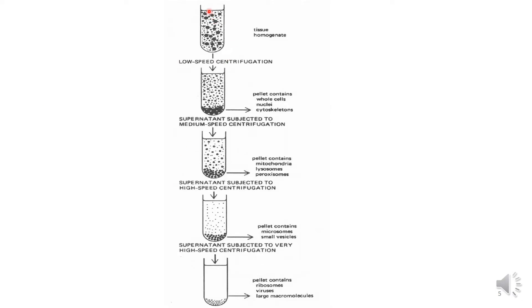Here is a diagrammatic representation: starting with tissue homogenate, low speed centrifugation separates the pellet containing whole cells, nuclei, and cytoskeletons. This pellet is removed, and the supernatant is transferred to another tube and subjected to medium speed centrifugation, which collects a pellet containing mitochondria, lysosomes, and peroxisomes.